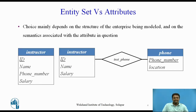Consider the entity set instructor with the additional attribute phone number. It can easily be argued that a phone is an entity in its own right with attributes phone number and location. The location may be the office or home where the phone is located. If we take this point of view, we do not add the attribute phone number to the instructor. Rather, we create a phone entity set with attributes phone number and location, and a relationship set instructor_phone denoting the association between instructors and the phones that they have.